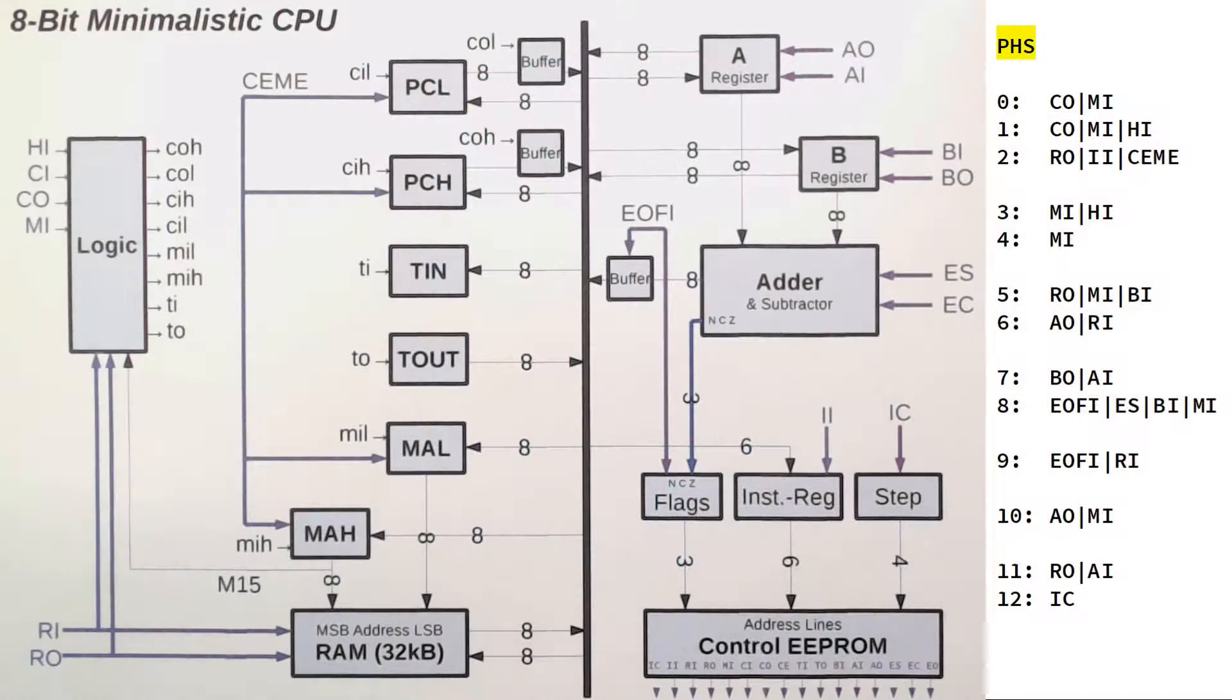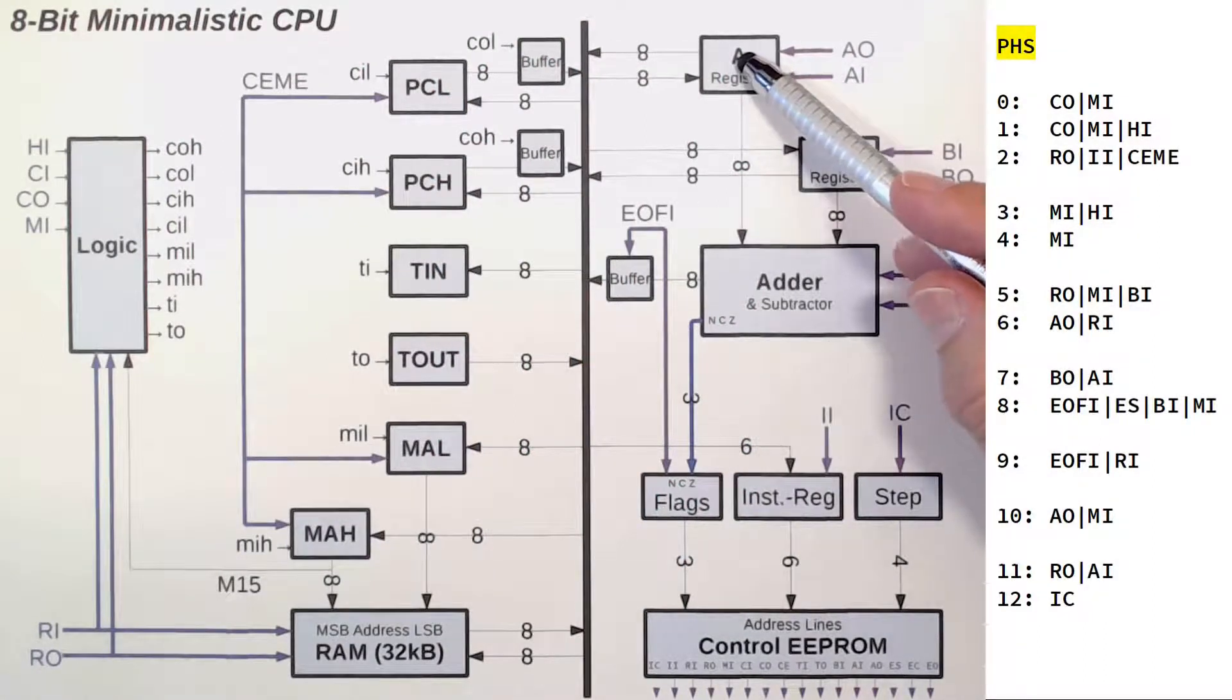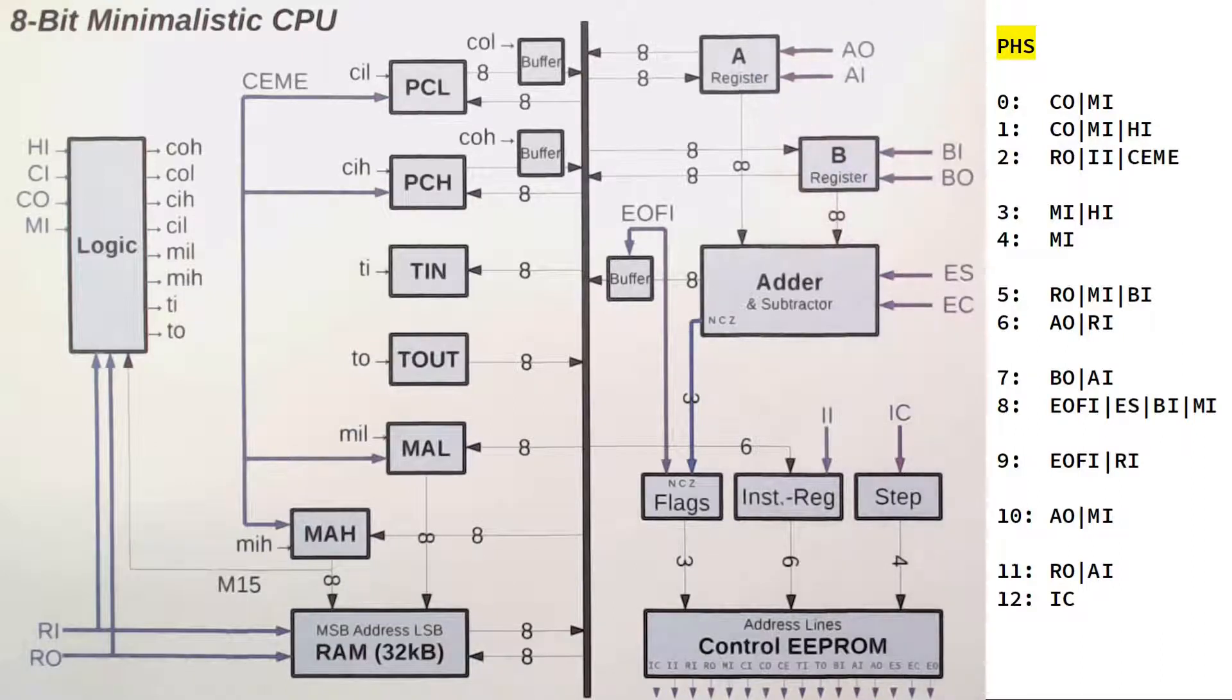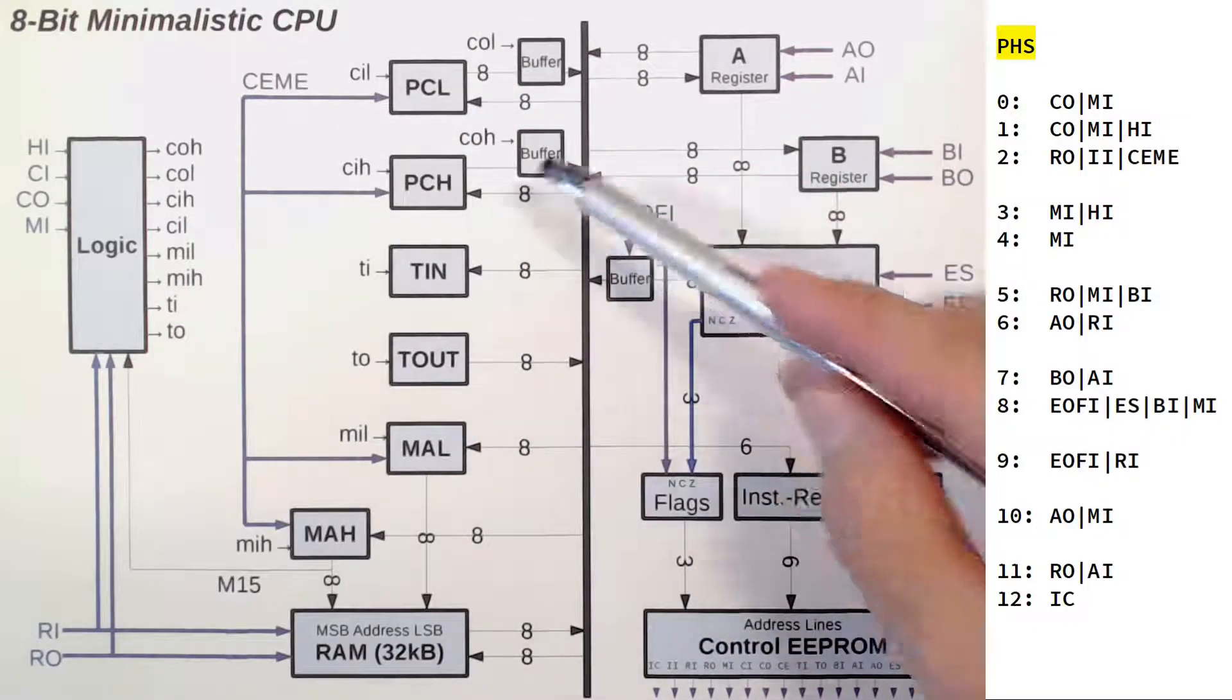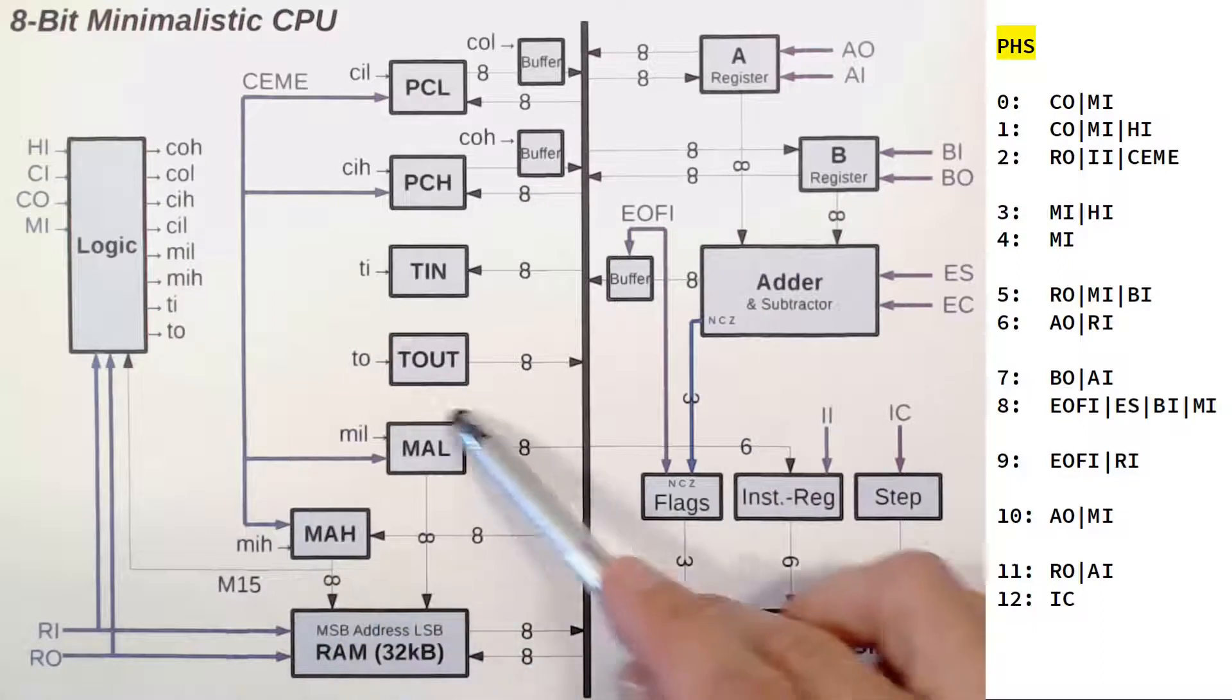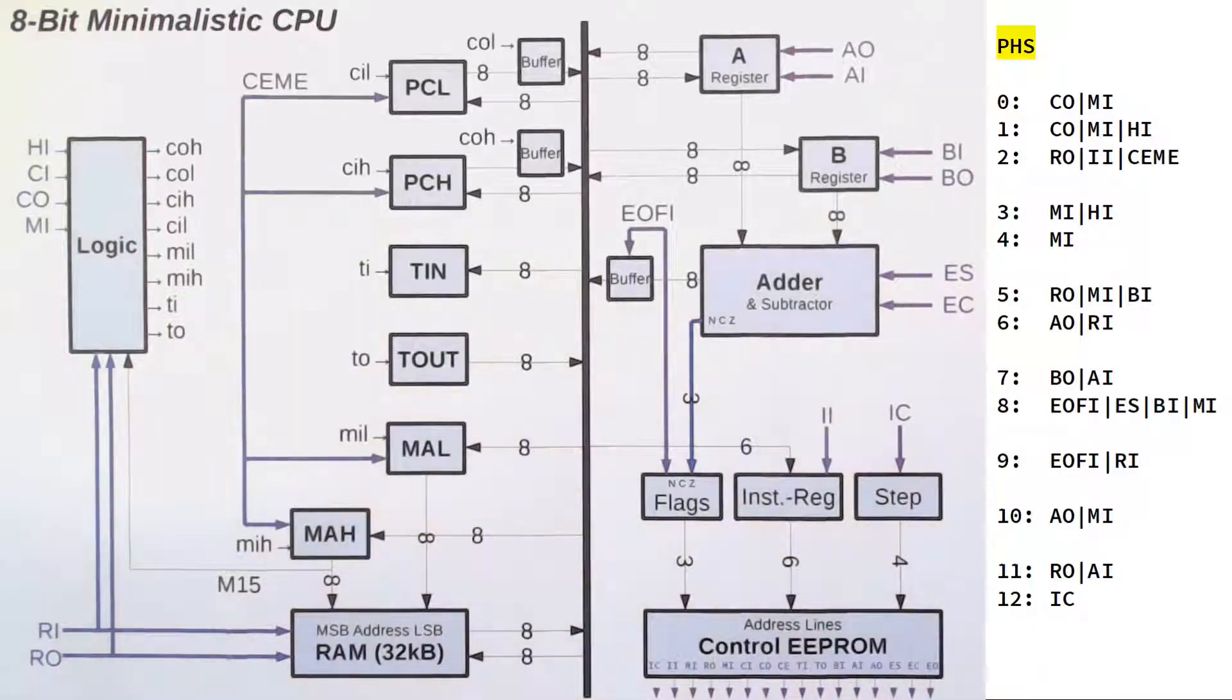Let us begin with the PHS instruction, which pushes A onto the stack and decrements the stack pointer, growing the stack downwards. To make things easier, let's call this whole program counter setup here PC and our memory address register MAR. As always, the first three microsteps just fetch an opcode from memory. Let's visualize the data flow step by step.